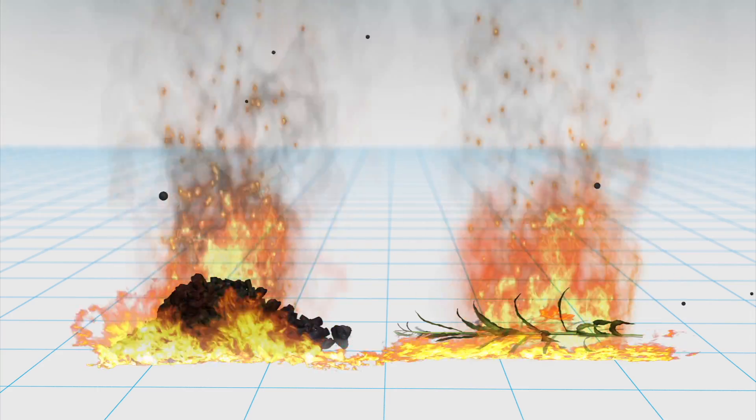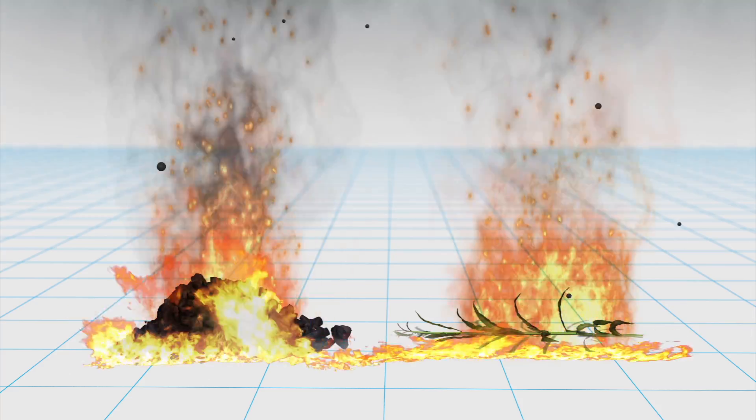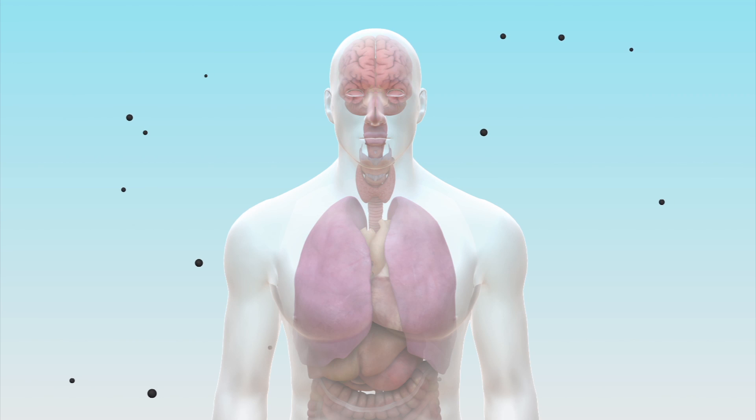Black carbon is a climate forcing agent formed through the incomplete combustion of fossil fuels, biofuel, and biomass. It is a particular problem because rain does not easily wash it out of the atmosphere, which allows it to travel long distances. Black carbon is linked to asthma, lung, and heart disease.